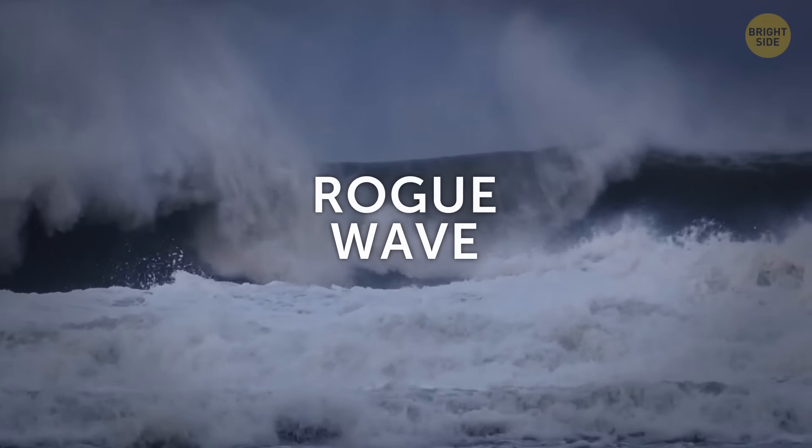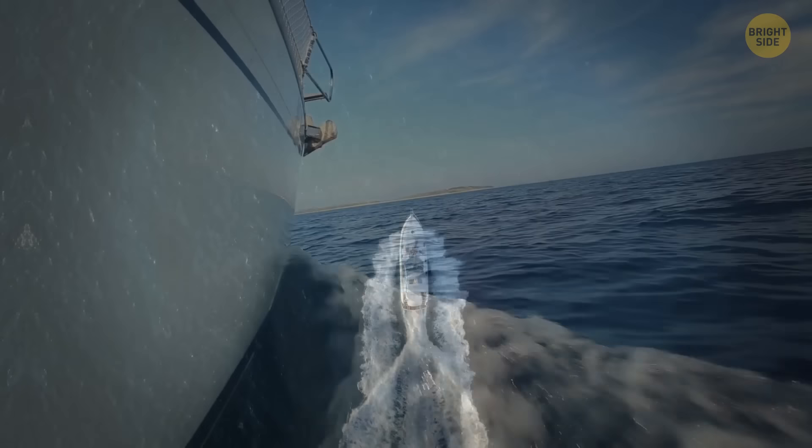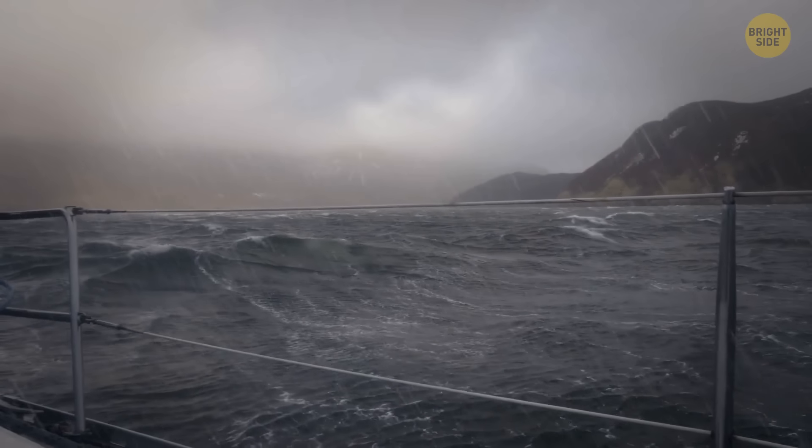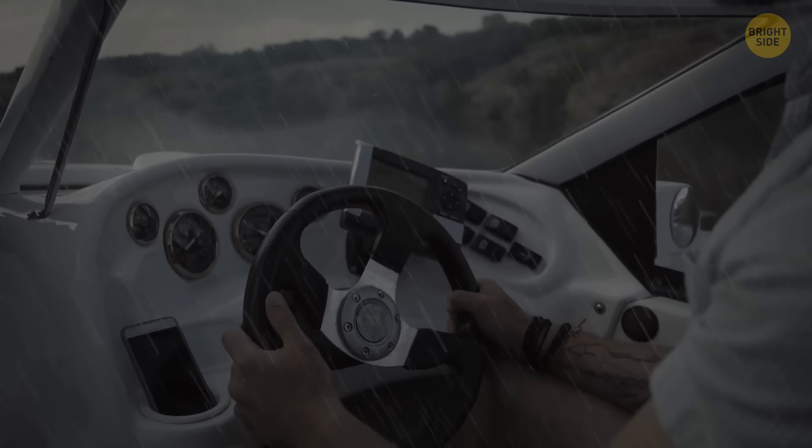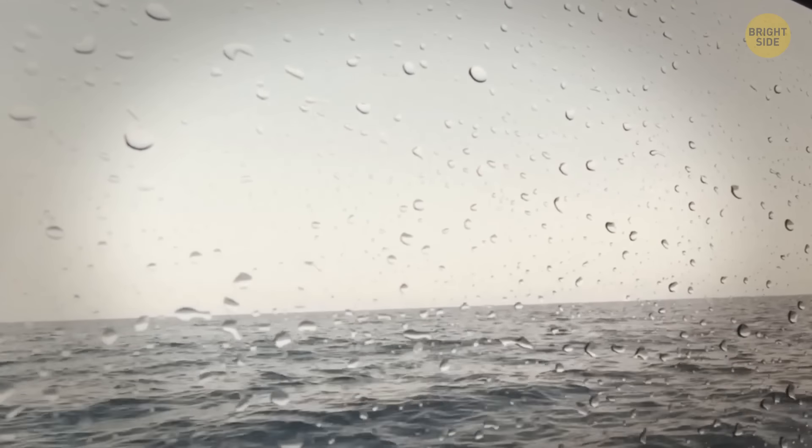So now let's get aboard your yacht and sail somewhere in the ocean. It doesn't matter what ocean and where exactly you are, because rogue waves can appear anywhere. A small storm is starting, but your boat can easily handle it.